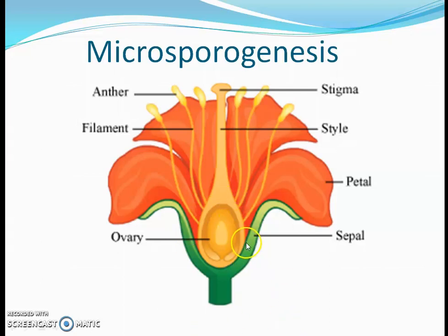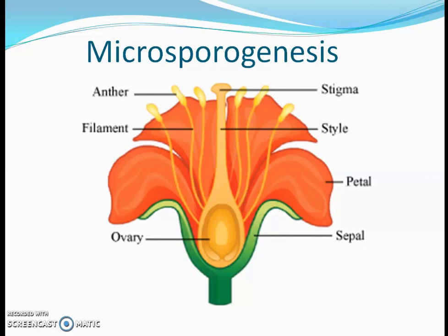What are they? That is Calyx, Corolla, Androecium, and Gynoecium. Here, if you see these two — the Calyx and Corolla — though these are essential to protect the flower and also for pollination, in sexual reproduction the male unit and female unit are both essential and these are fertile.